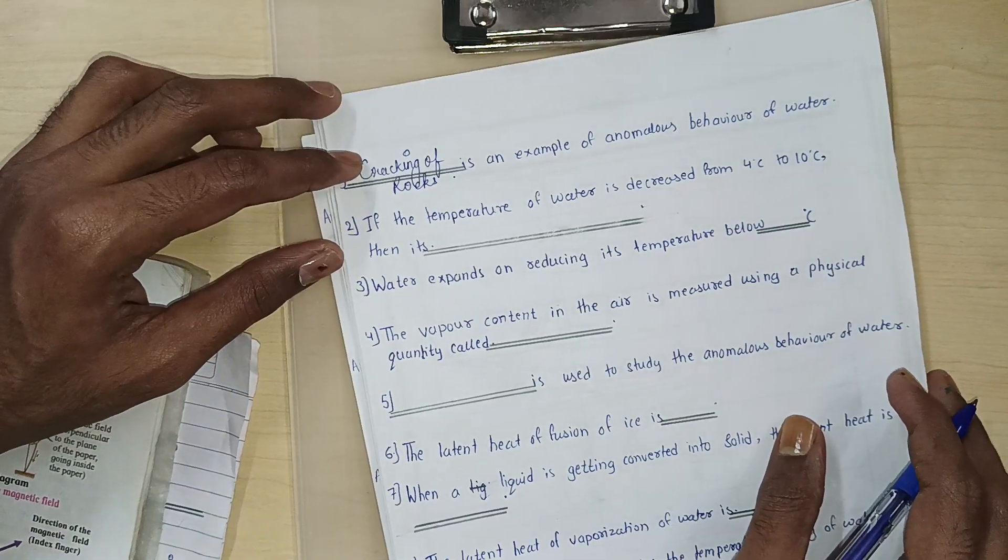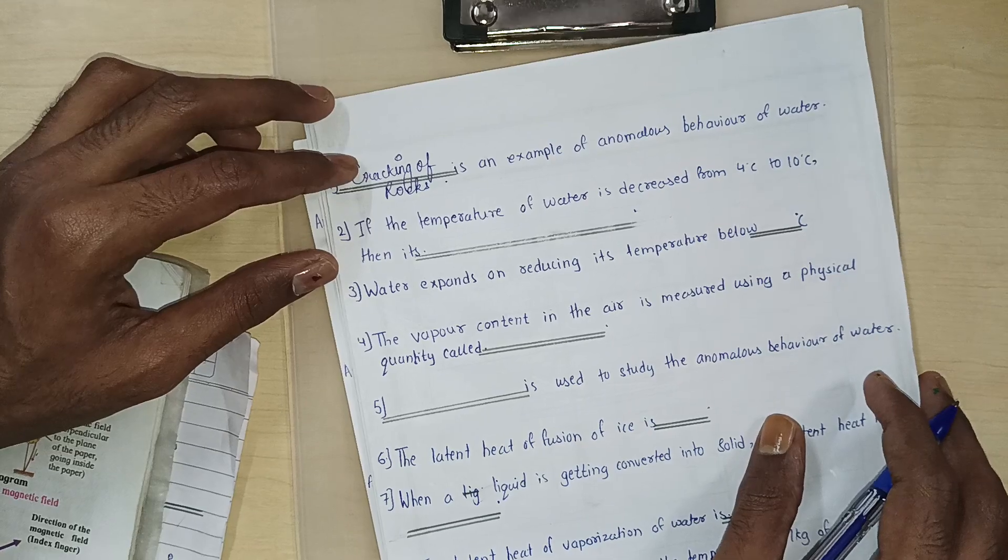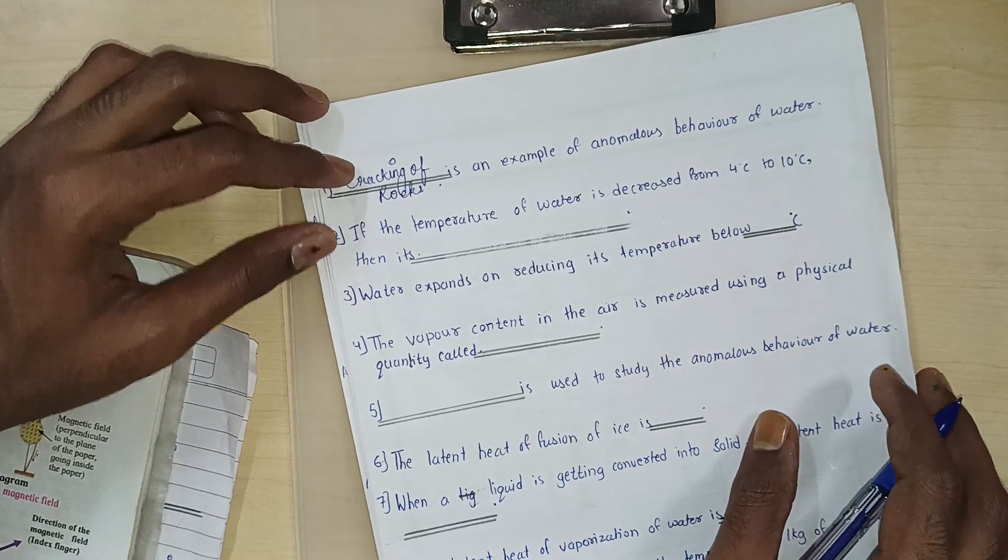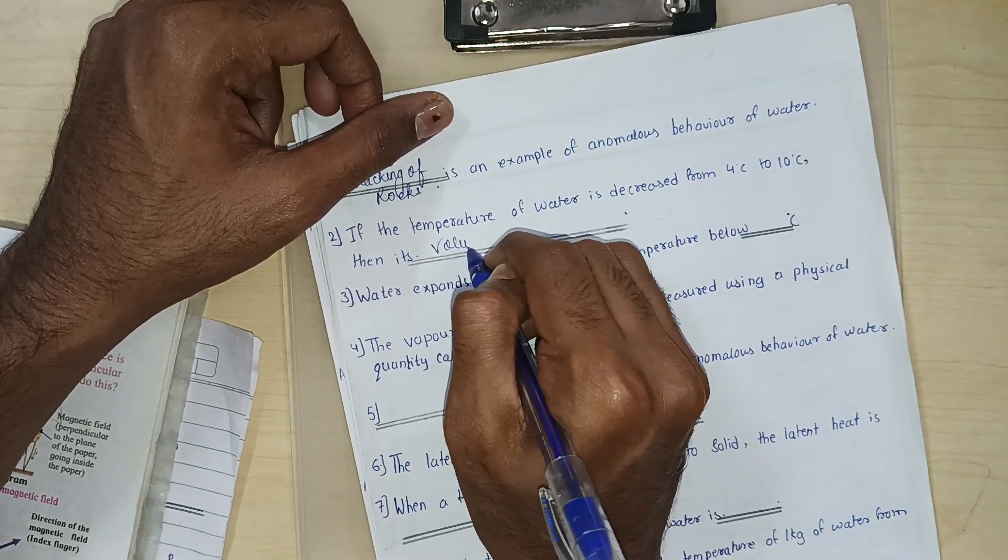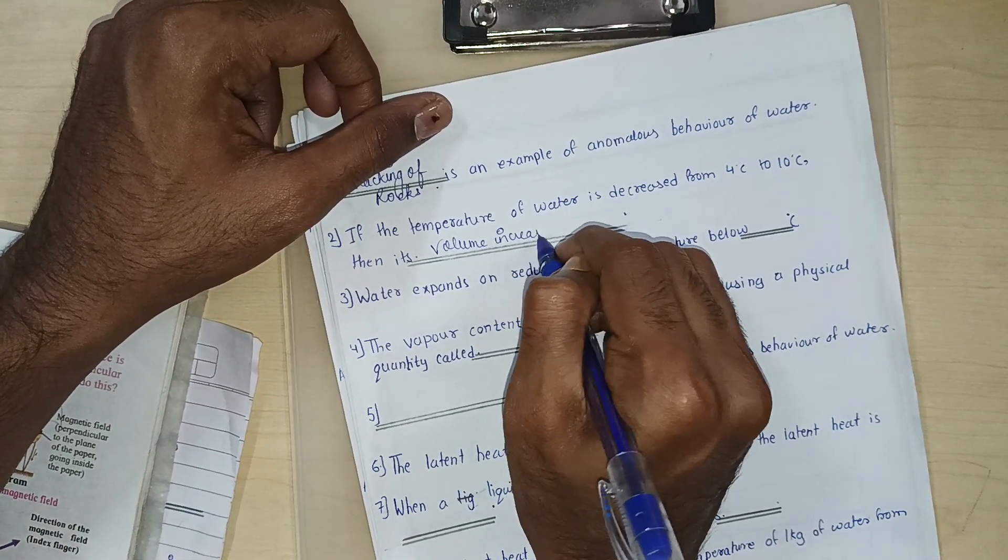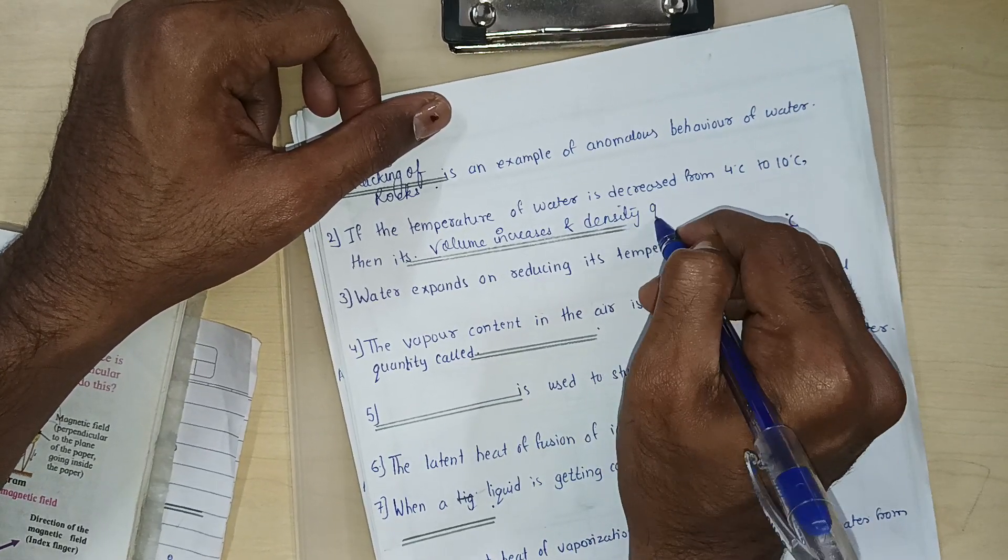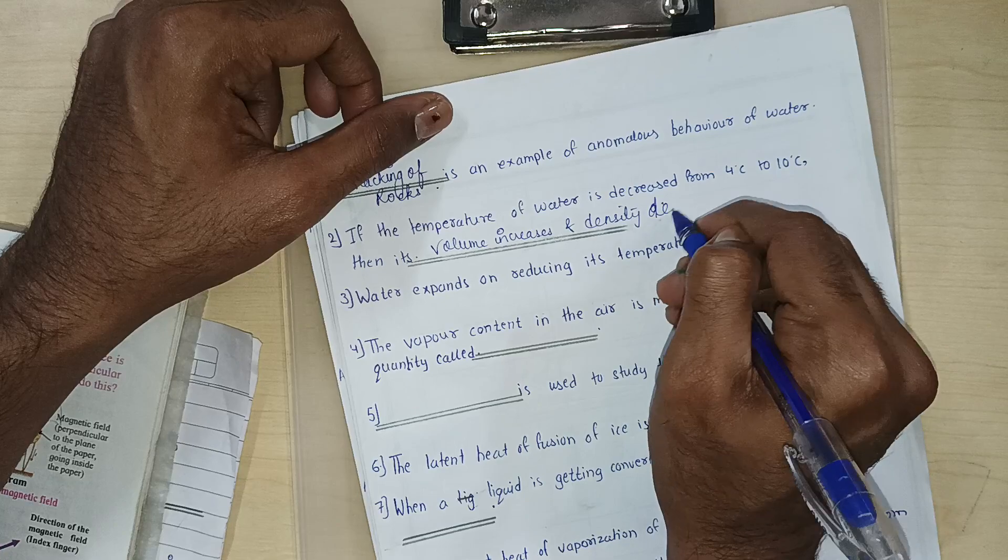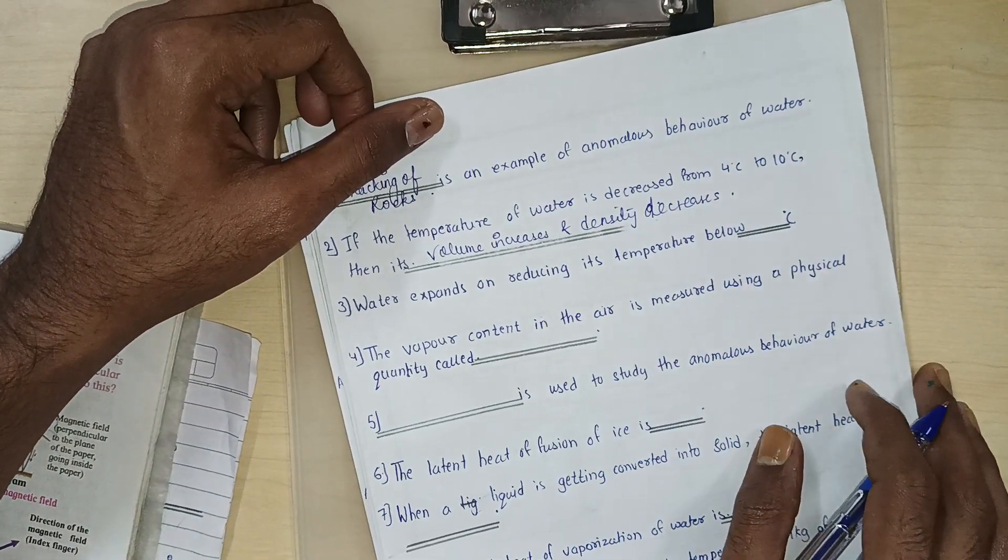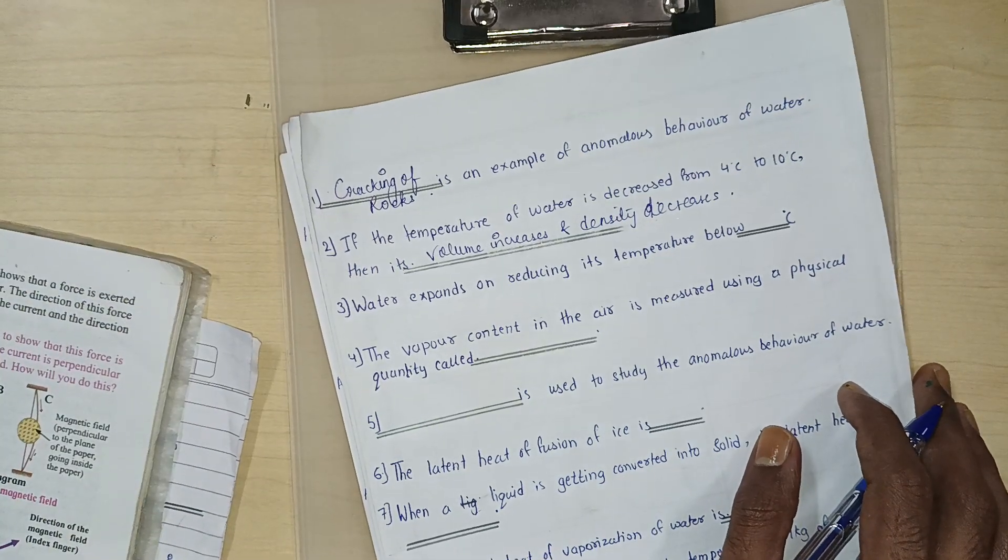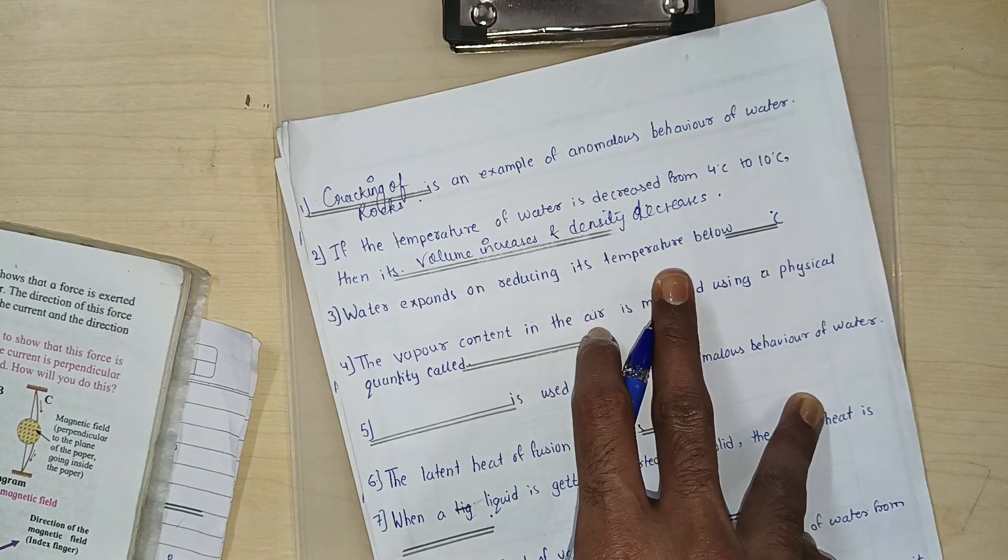If the temperature of water is decreased from 4 degree Celsius to 10 degree Celsius, then what happens? Volume increases and the density decreases. Volume increases and density decreases. This is all questions which I am mentioning over here.